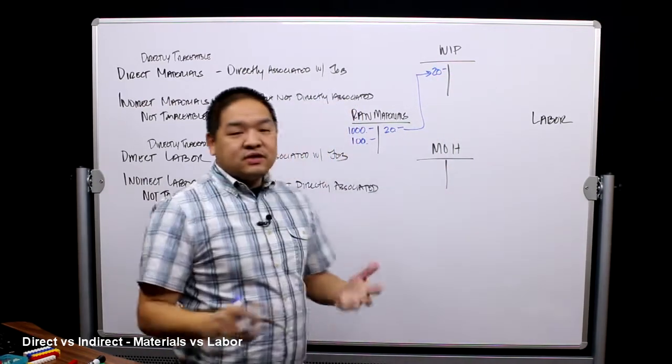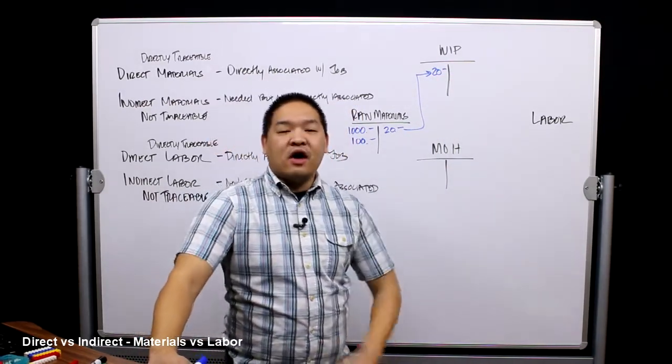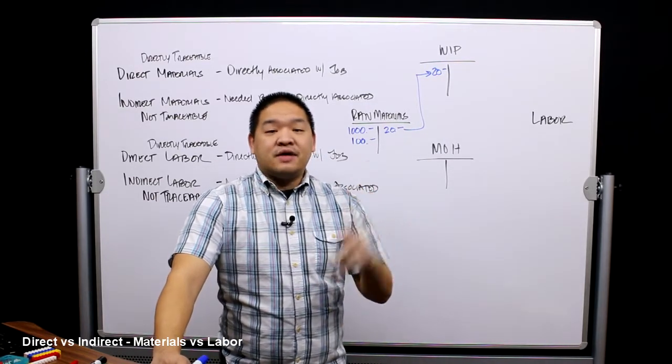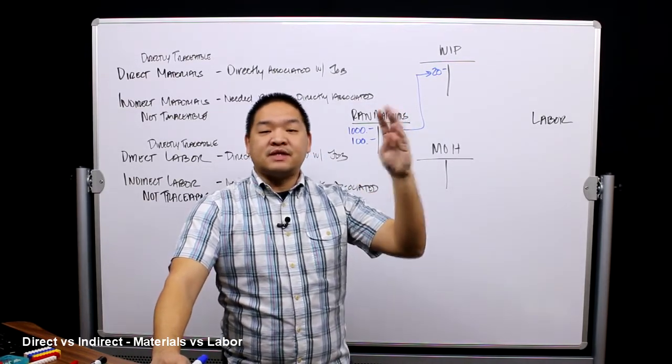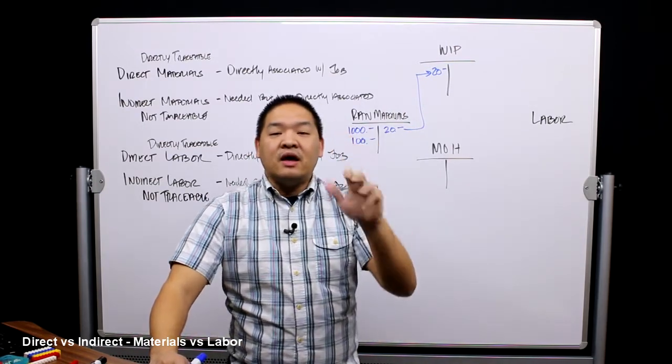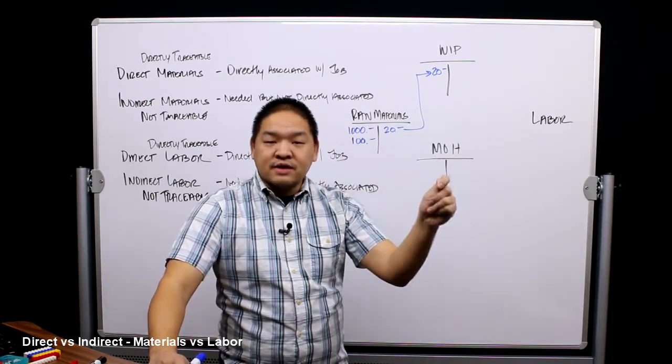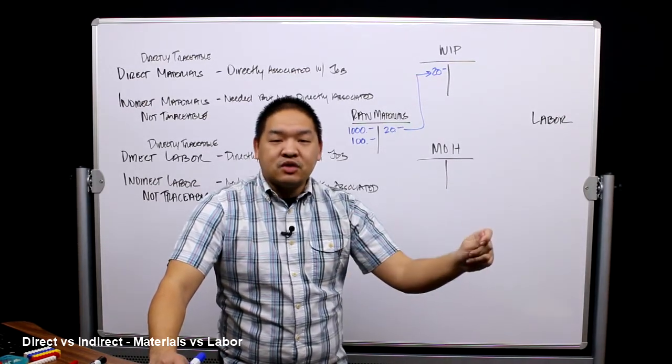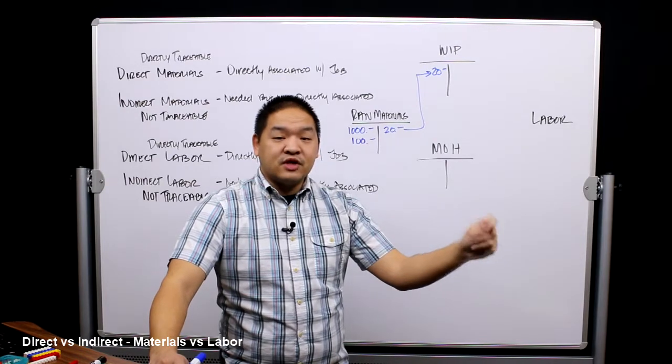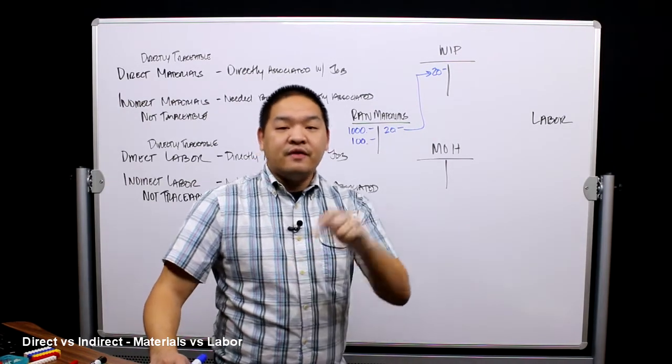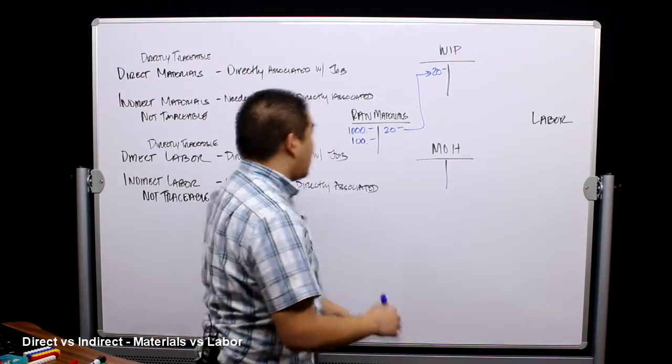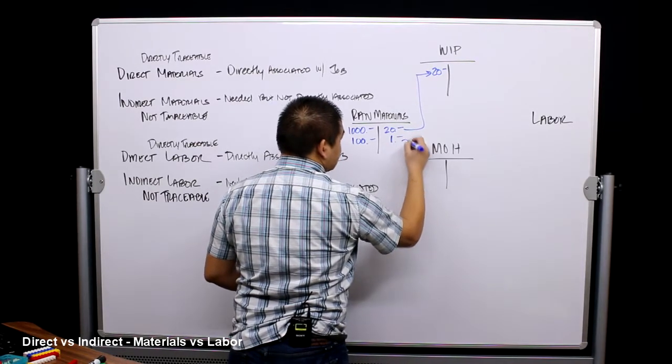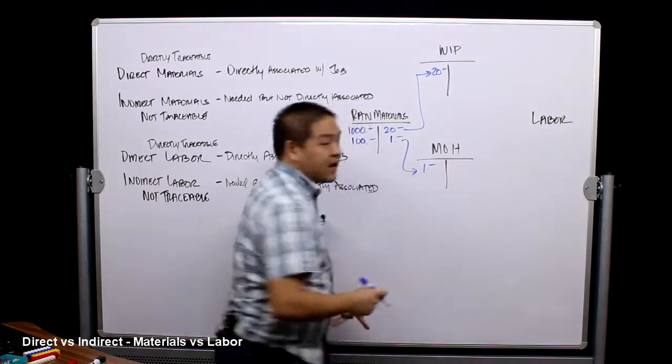Now I also need a towel and the towel costs us a dollar a piece. I grab a towel that I'm going to use all day that's not associated with this job, but when I grab that towel, I'm removing it from raw materials inventory. If I remove it from inventory, the cost has to move as well. When I remove it from inventory, the cost moves from raw materials, one dollar, to manufacturing overhead.